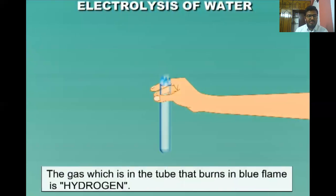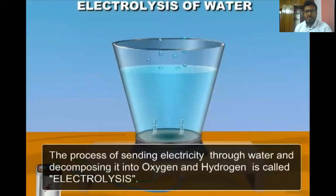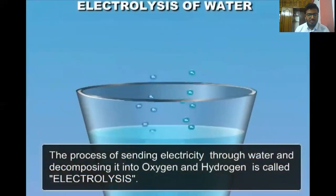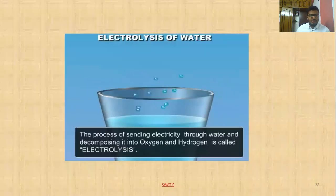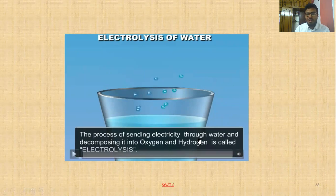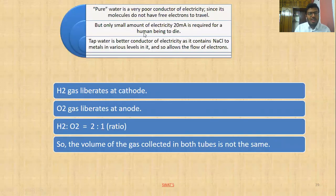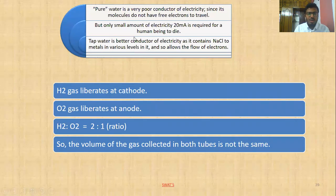Introduce a glowing splinter into the test tube with more gas — the splinter is put out with a pop sound, but the gas burns with a blue flame. Hydrogen has this property, so the gas in this test tube is hydrogen. Sending electricity through water and decomposing it into oxygen and hydrogen is called electrolysis.